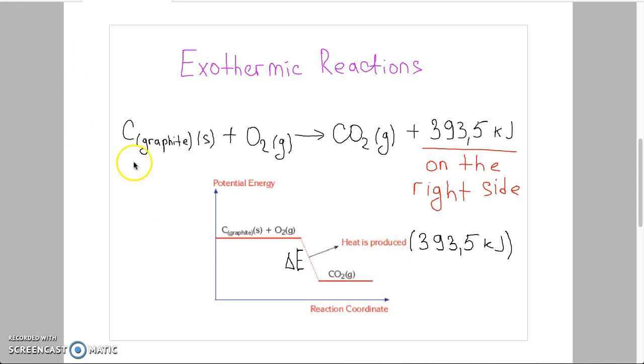For example, when one mole of graphite is burned or reacted with oxygen, we have 393.5 kJ of energy released.